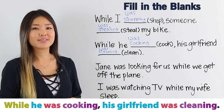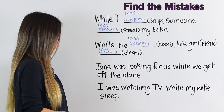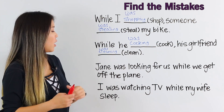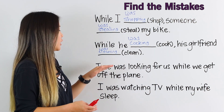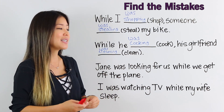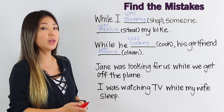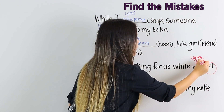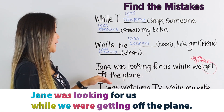Did you get that? Let's move on. Try to find the mistake in the next sentence: Jane was looking for us while we get off the plane. The first part is correct — Jane was looking. But the second part is not in the past continuous tense. What we need to say is were getting. Jane was looking for us while we were getting off the plane.